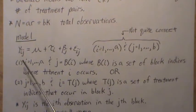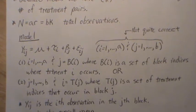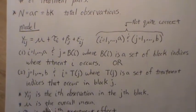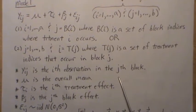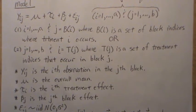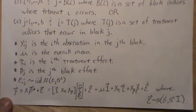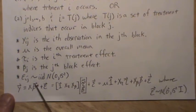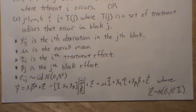Y_ij is the i-th observation in the j-th block. Mu is the overall mean, tau_i is the i-th treatment effect, beta_j is the j-th block effect, epsilon_ij is IID random variables, normally distributed, mean zero, constant variance sigma squared.